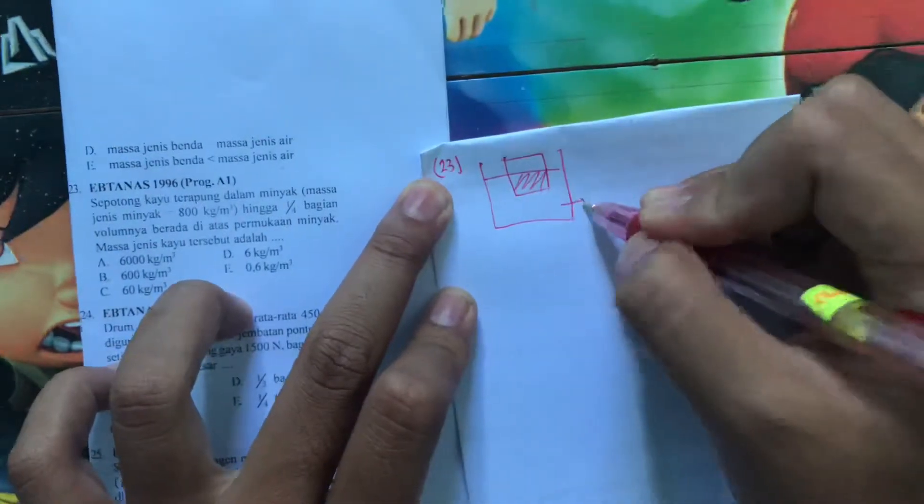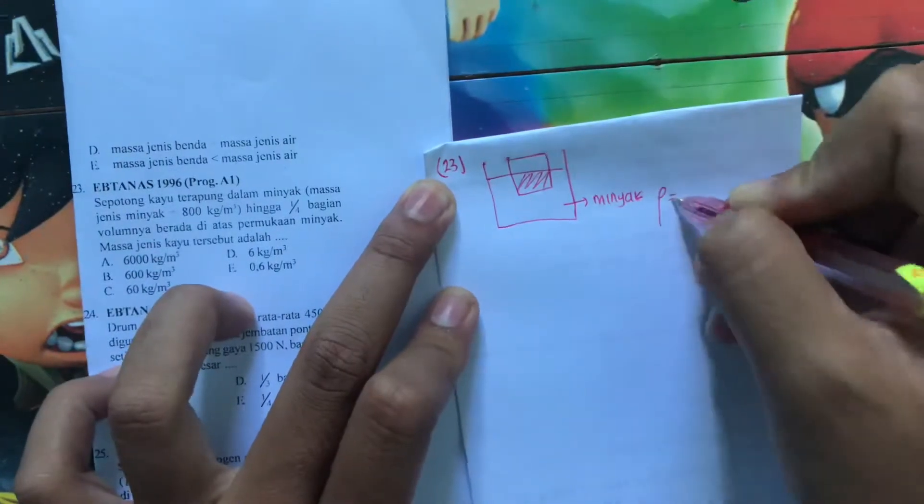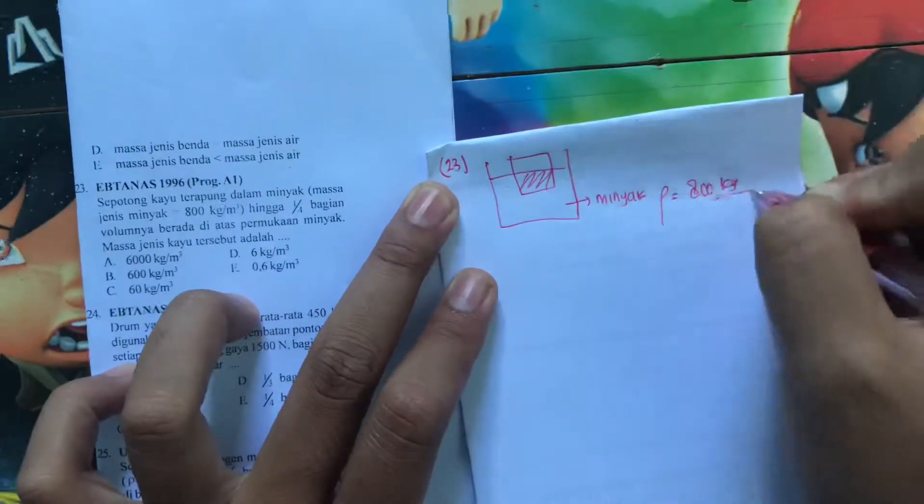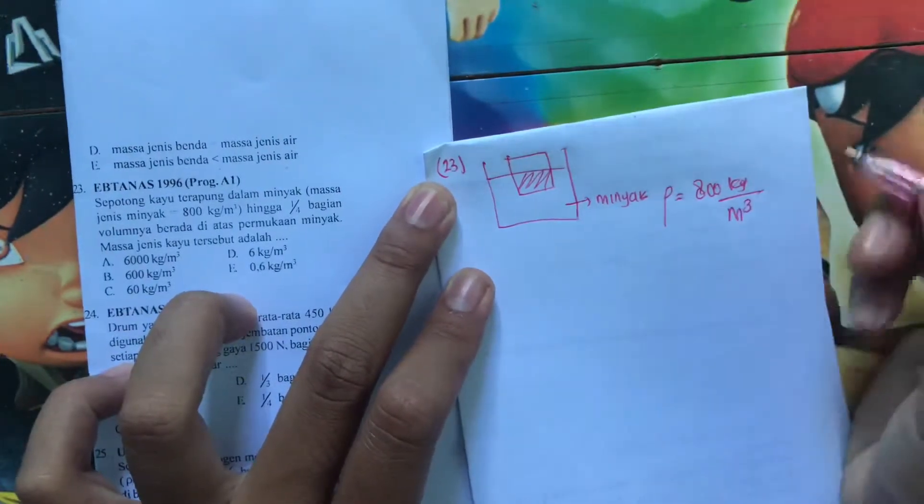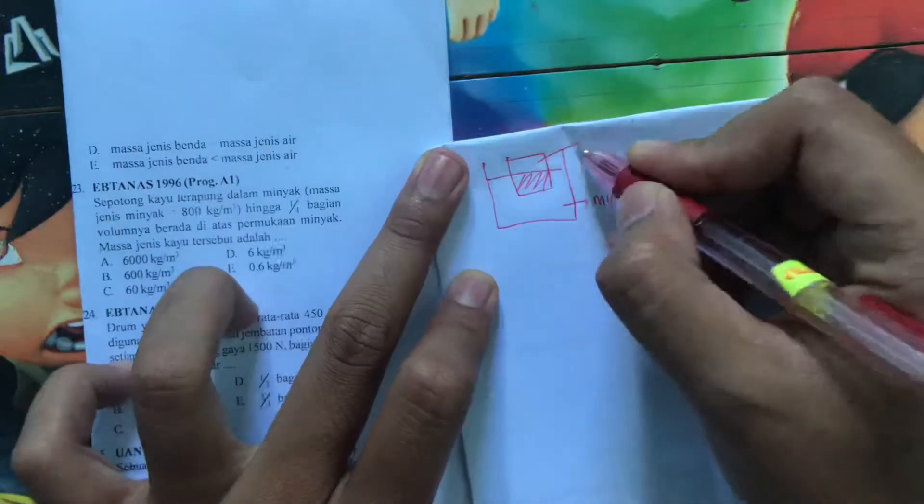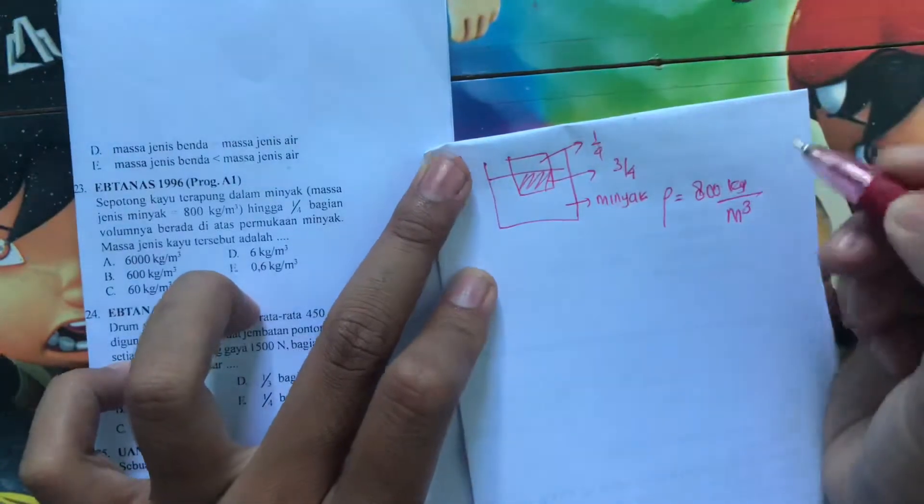Ini masih hukum Arsimedes yang seperti ini kan. Dia bilang apa? Ini adalah minyak. Densitasnya 800 kg per meter kubik. Hingga seperempat bagian volumenya berada di atas permukaan minyak. Berarti ini kan seperempat nih. Berarti sisanya di sini berapa? 3 per 4.